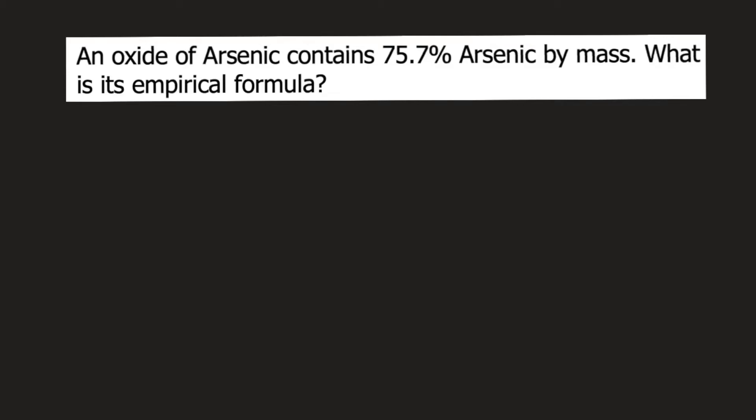An oxide of arsenic contains 75.7% arsenic by mass. What is its empirical formula? When you say oxide of arsenic, that means your compound contains two elements: arsenic and oxygen.